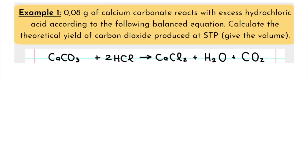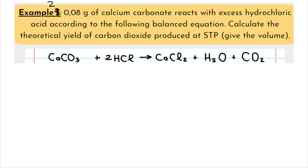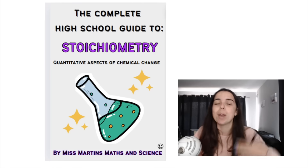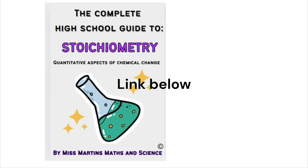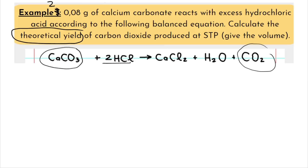Let's do example 2, which is slightly more difficult, and then example 3, which is even more difficult. This example comes from my stoichiometry study guide available for sale on my website — 100 pages, 50 worked examples, available for grade 10 through grade 12. Example 2: 0.08 grams of calcium carbonate reacts with excess hydrochloric acid according to the following balanced equation. Calculate the theoretical yield of carbon dioxide produced at STP, and give the volume. Note: equations always have to be balanced — generally they give it to you balanced, but if not, you have to balance it.